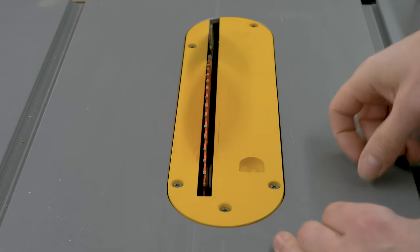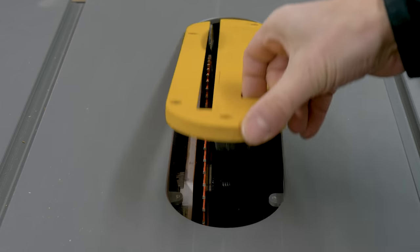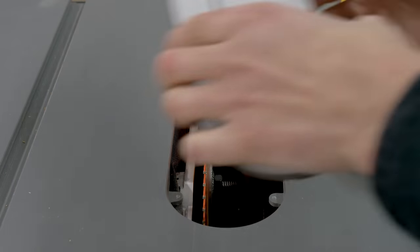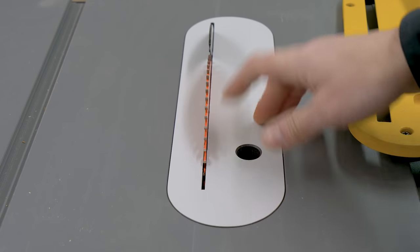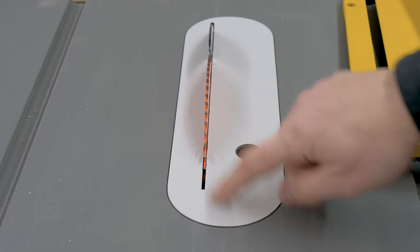Another common problem with the inserts that come with the saws is the distance between the blade and the insert itself. When cutting delicate wood or boards, these splinter on the lower side, at the exit point of the cut.